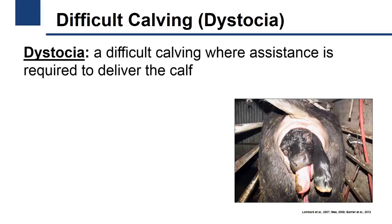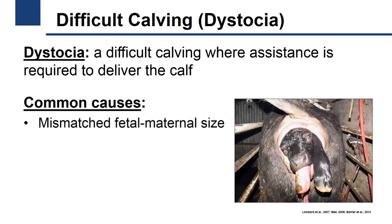Dystocia is defined as a difficult calving where assistance is required to deliver the calf. The most common cause of dystocia is mismatched fetal-maternal size — where the calf is too big for the cow or the cow's pelvis is too small for the calf — and this is more common in first-calf heifers.